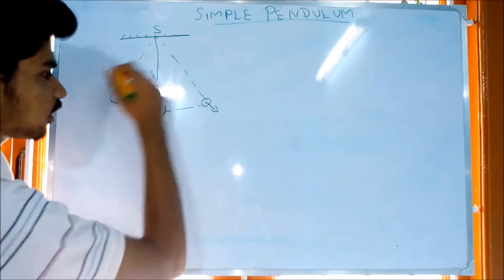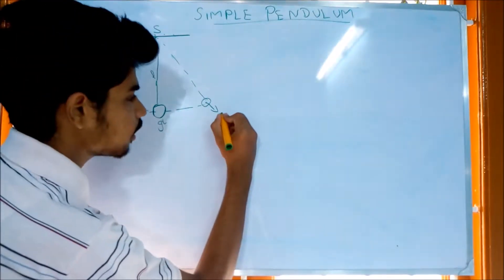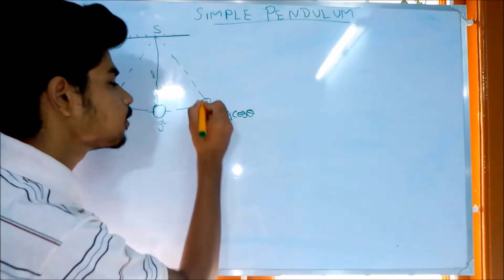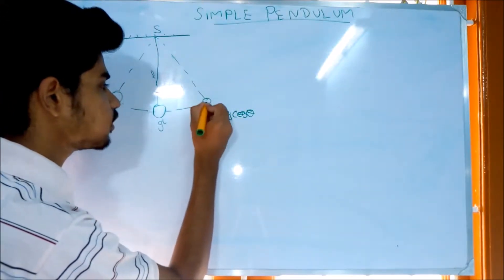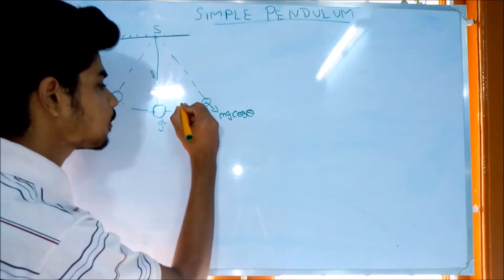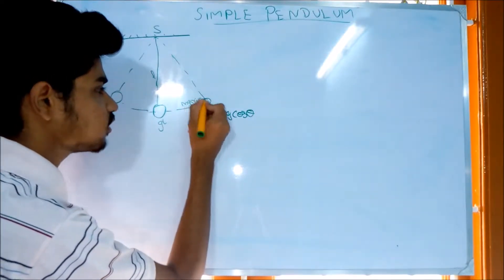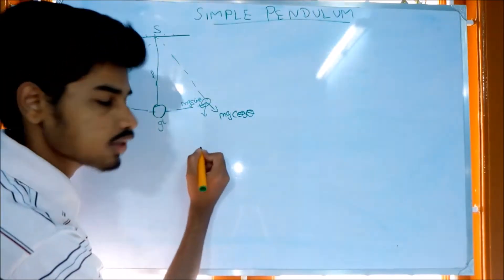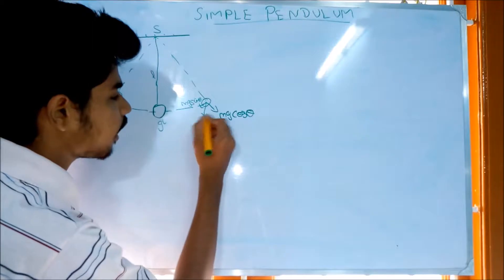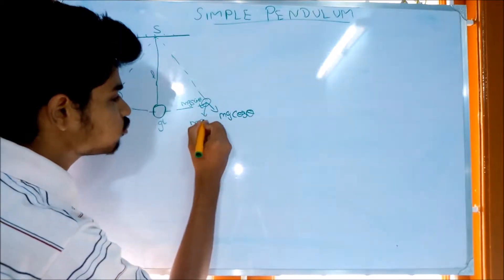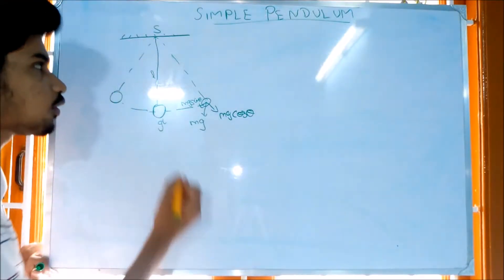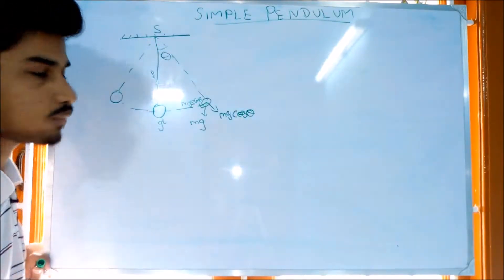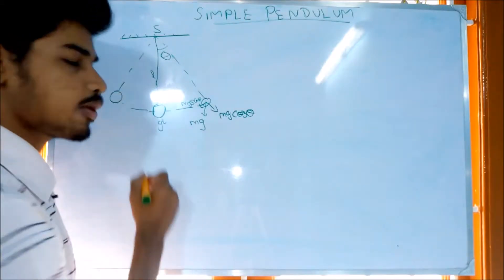Take the force acting — we call it Mg cos theta. So let's say the force here. If you look at this side, you see Mg sin theta. The center of force is Mg, and if you see the angle theta, you can identify the components.